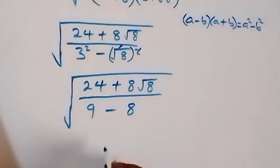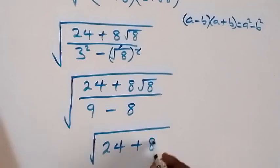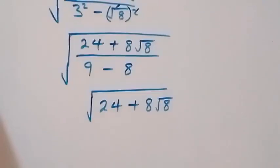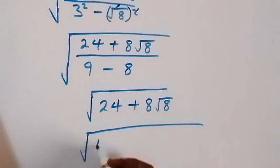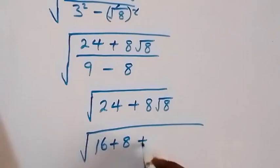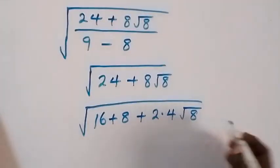Everything divided by 1 is the same thing, so this reduces to the square root of 24 plus 8 root 8. We can write 8 root 8 as 2 times 4 times root 8, and root 8 can be written as 2 times root 8, while 4 can be written as root 16.